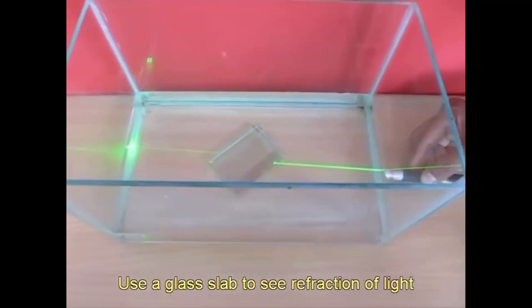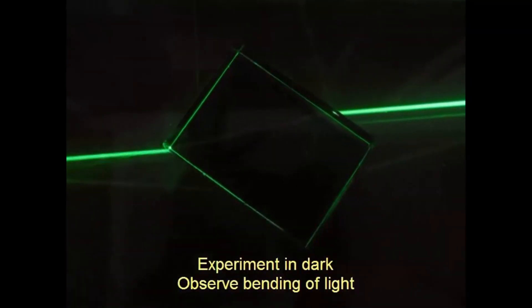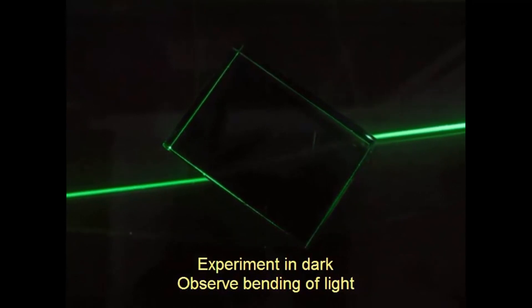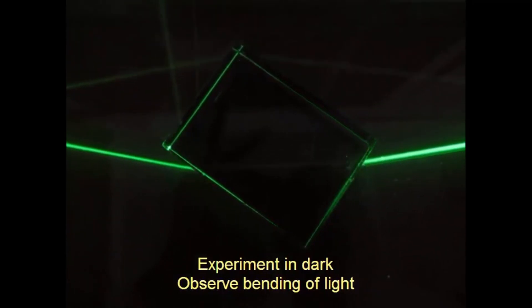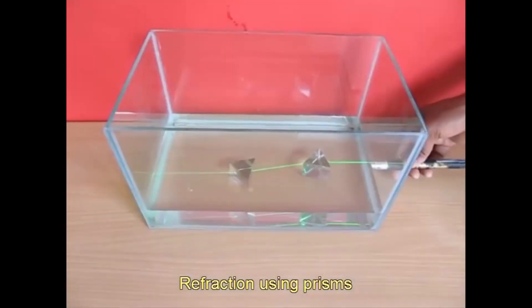Alright guys, here I am using a glass cuboid. As you can see, the light is refracting within the cuboid and coming out the other side. The incident rays are not parallel to the refracted rays.